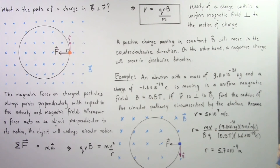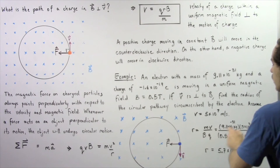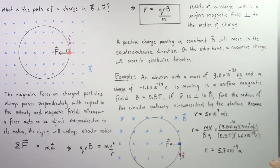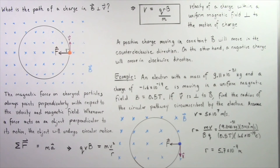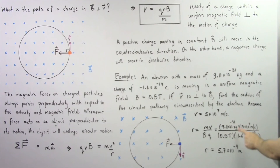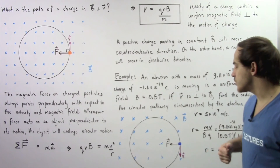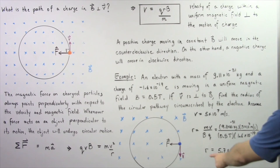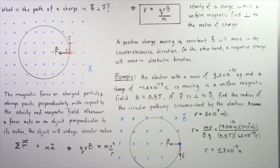The radius equals the ratio of MV to BQ. So we compute: 9.11 times 10 to the negative 31 kilograms multiplied by 5 times 10 to the 7 meters per second, divided by 0.5 teslas multiplied by 1.6 times 10 to the negative 19 coulombs. Note that the negative on the charge cancels because the velocity is also negative, as it points in a negative direction along our y axis. The radius is therefore 5.7 times 10 to the negative 4 meters.